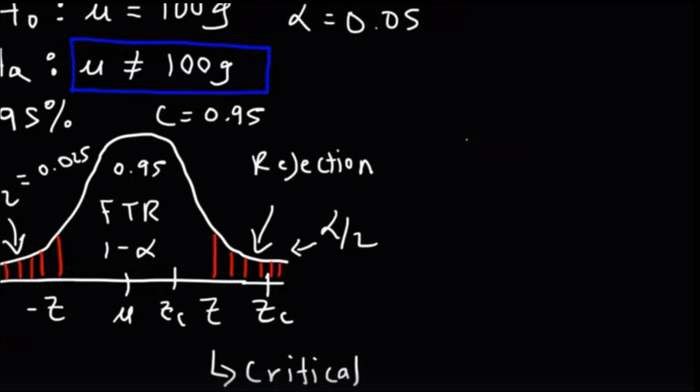Alpha is the significance level. C equals 0.95 is the confidence level, where C equals 1 minus alpha. The alpha is split into two regions with an area of 0.025 each.